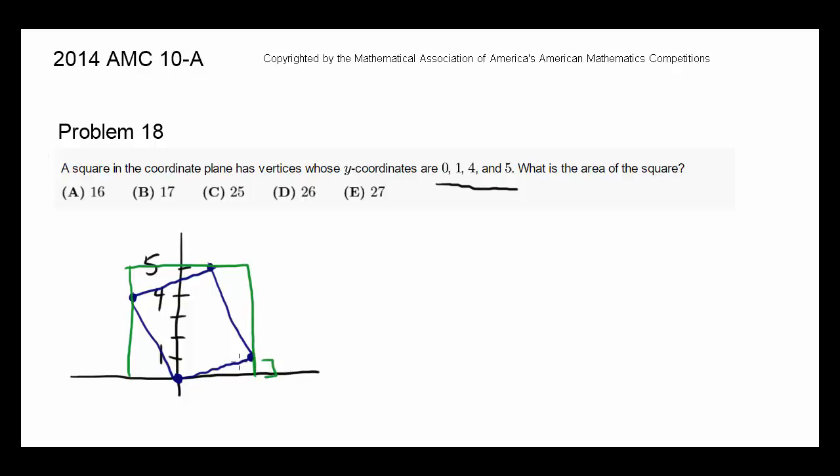The length of this is 1, and the length of this, actually the length of the entire side of this green square is 5. So we know the area of the entire green square is 25.